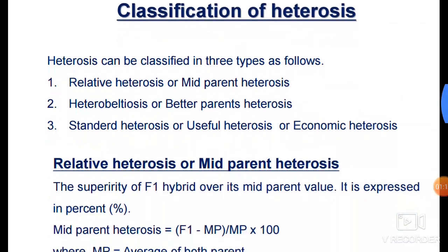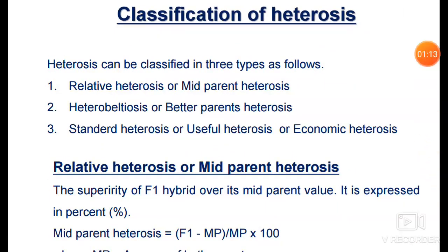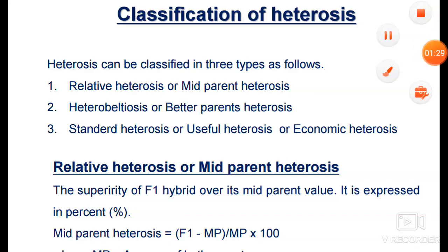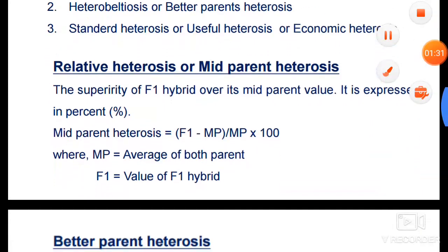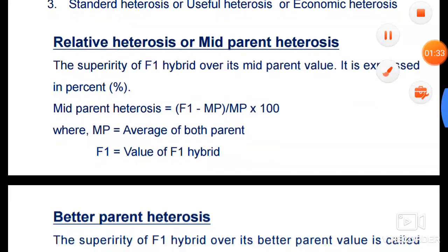Next is the classification of heterosis. There are mainly three types: the first is relative heterosis or midparent heterosis, the second is heterobeltiosis or better parent heterosis, and the third is standard heterosis, also called useful heterosis or economic heterosis. Let's take the first one — relative heterosis.